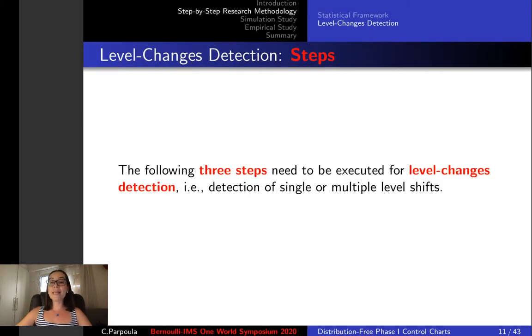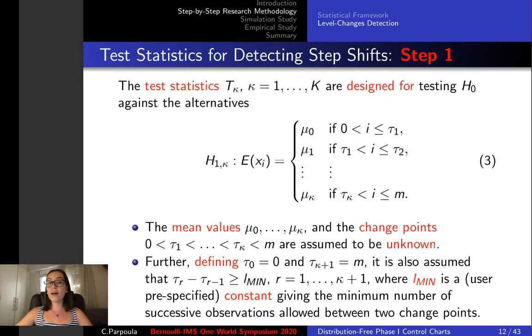We need to execute three steps in order to achieve level changes detection. First of all, we need to design the test statistics for testing the null hypothesis against the alternatives as described in relation three.